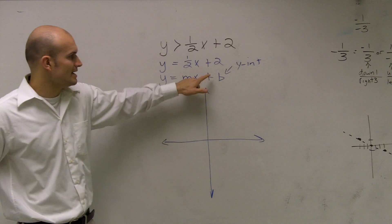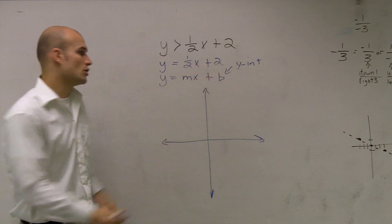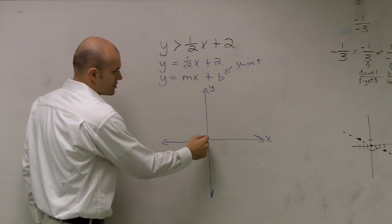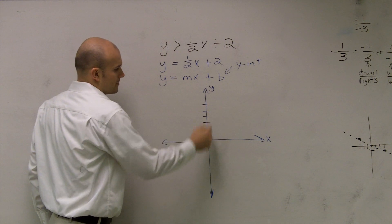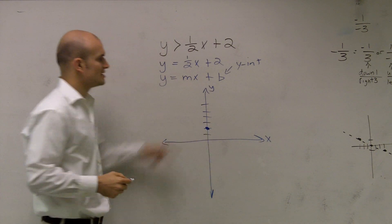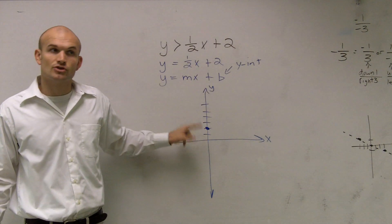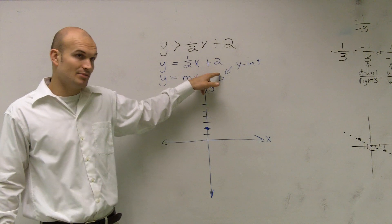So here, we see my y-intercept is at 2. So my y-axis is right here, and that's my x-axis. So I go up 2, and I make a dot, because at 2, that's where the graph crosses my y-axis, your y-intercept, right there, plus 2.